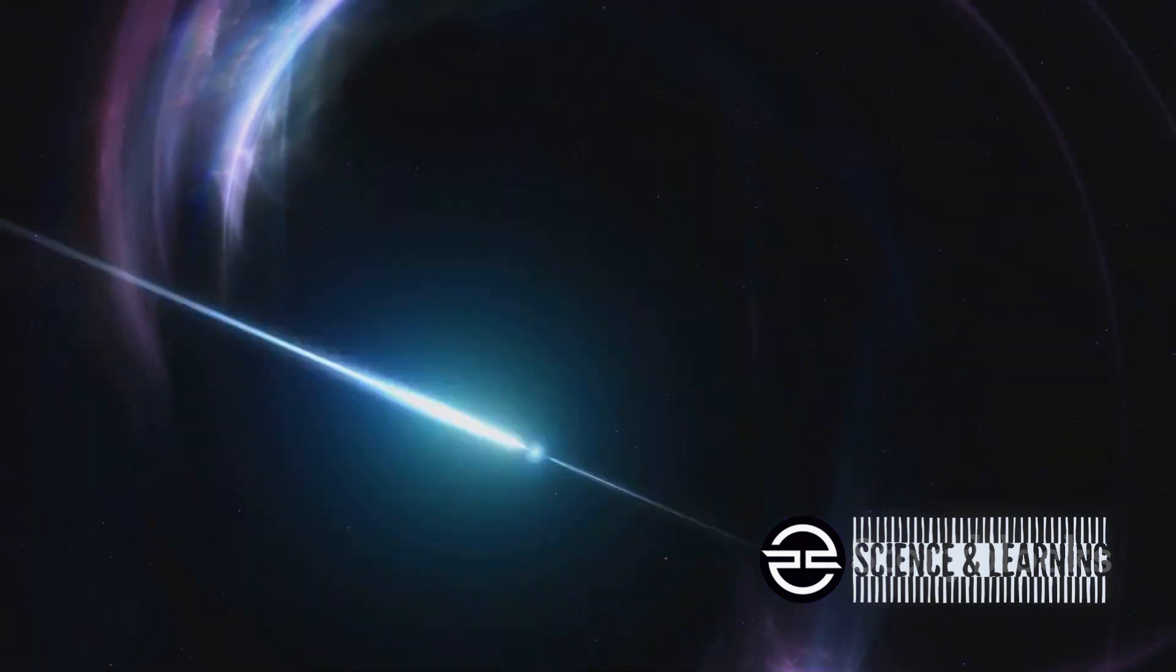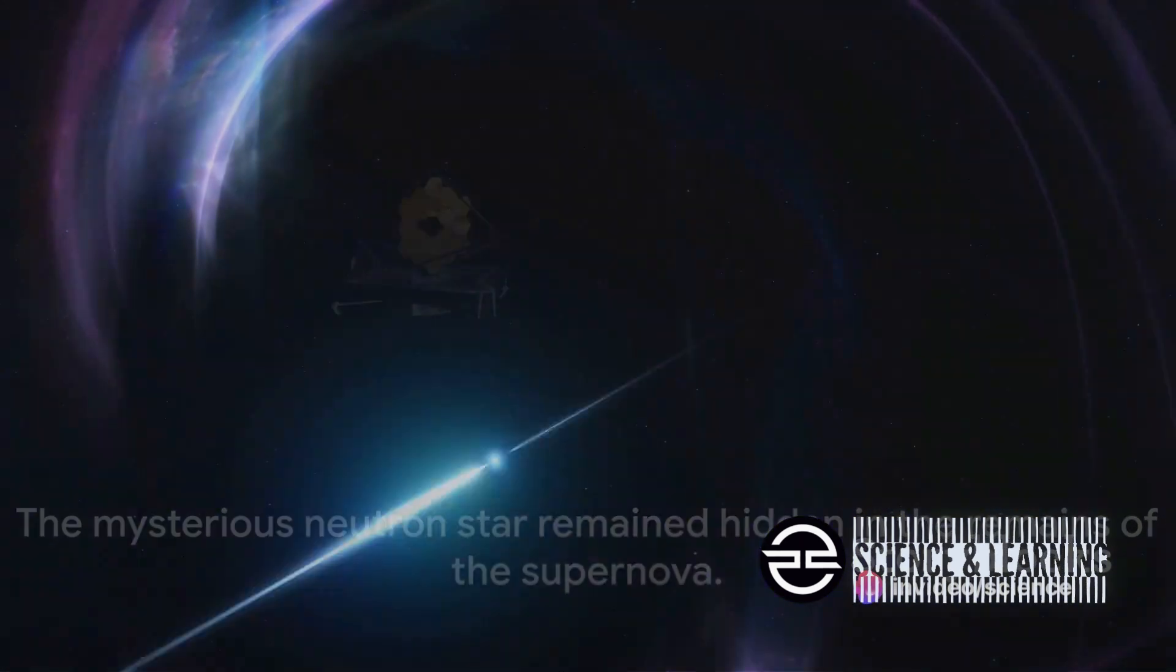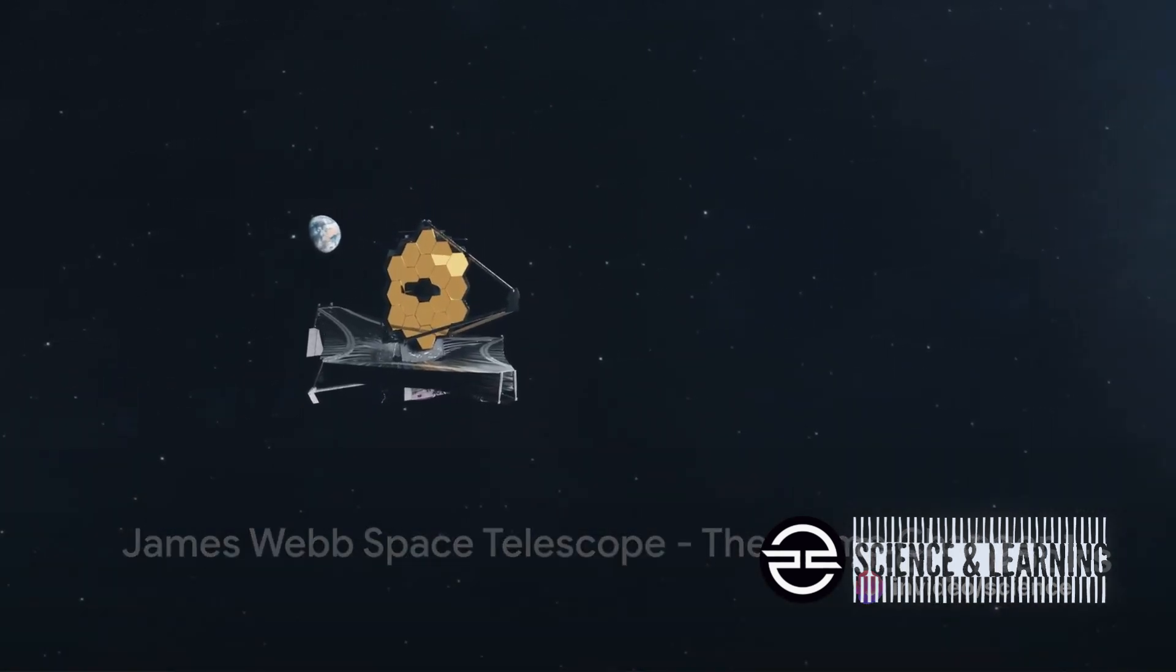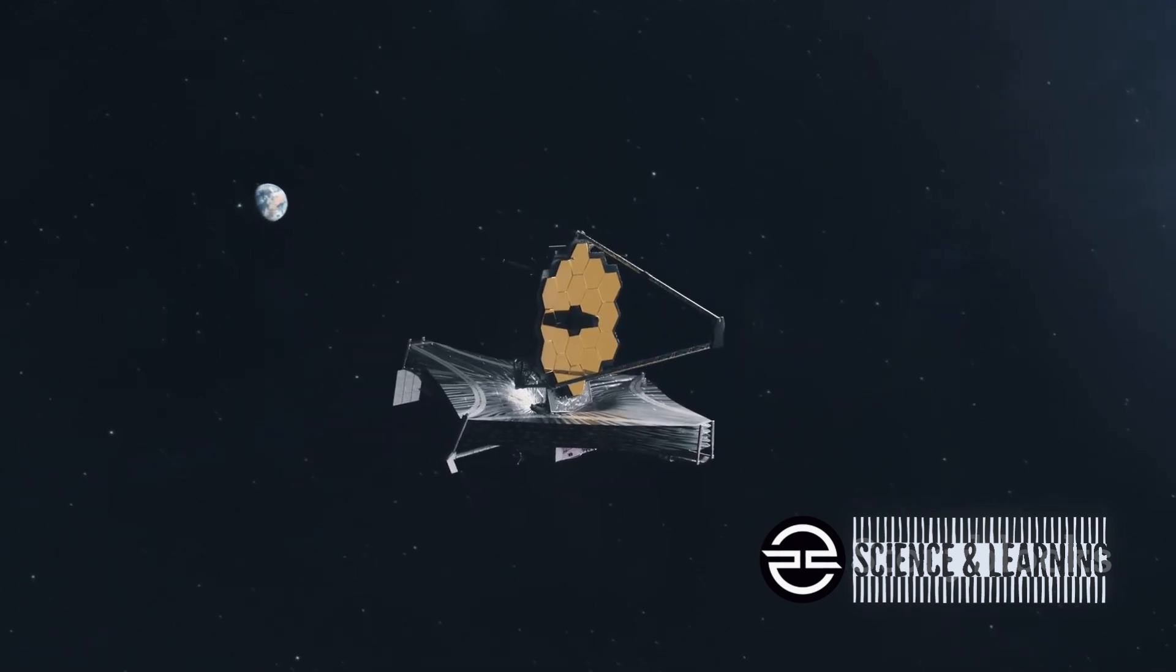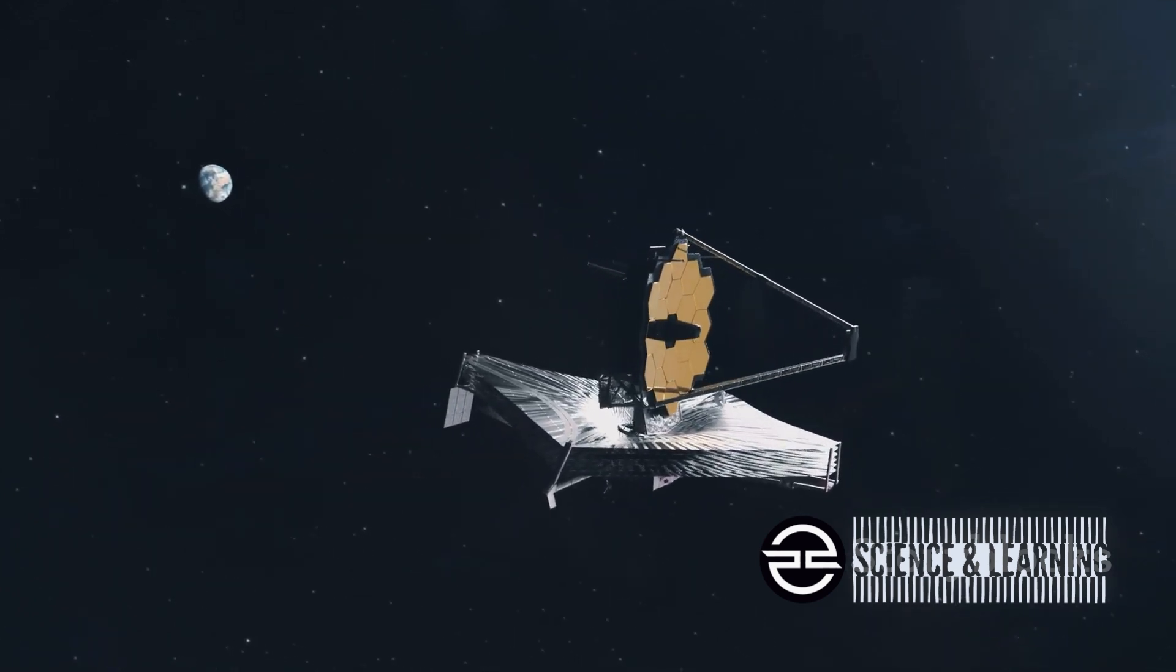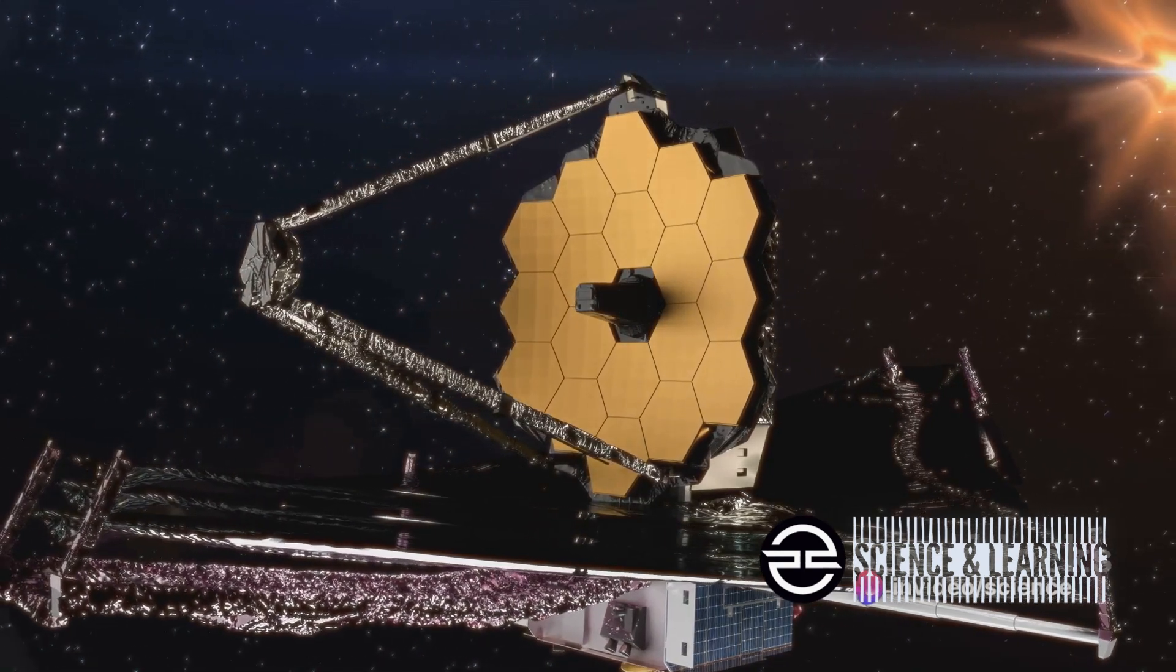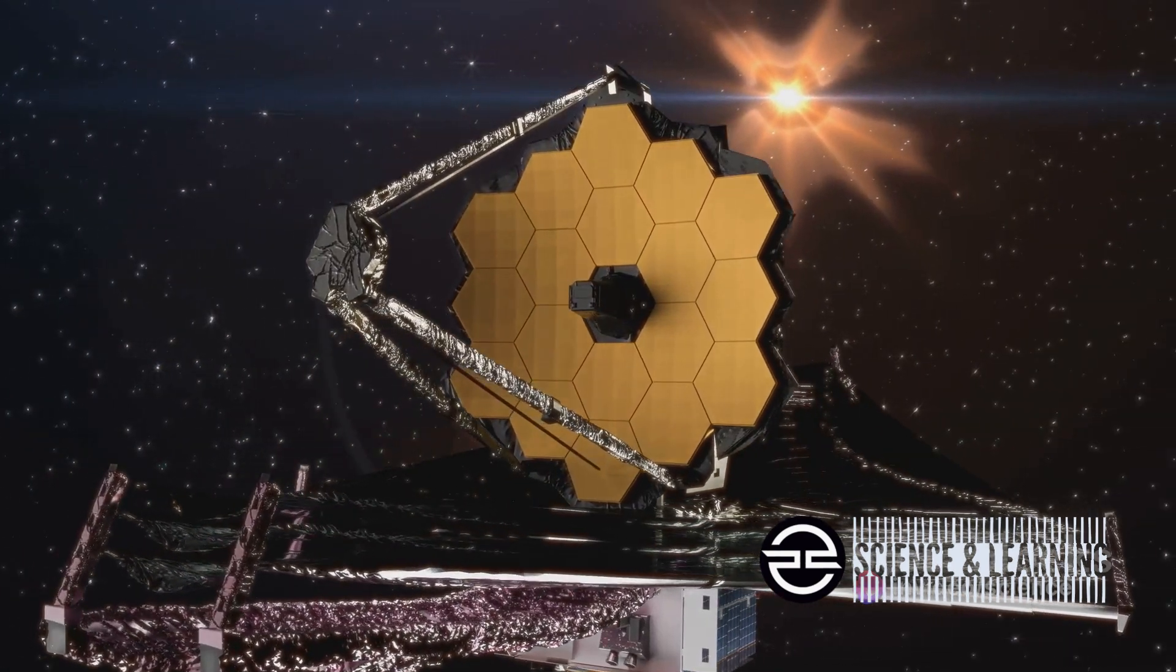Enter the James Webb Space Telescope, a marvel of modern technology. Launched after a decade of delays, the telescope represents a new era in space exploration. It's not just a telescope—it's a time machine capable of looking back over 13 billion years to see the first galaxies forming in the early universe.